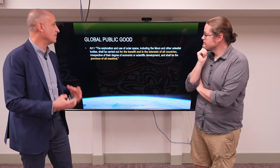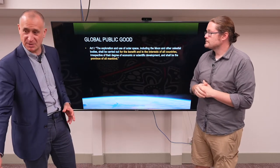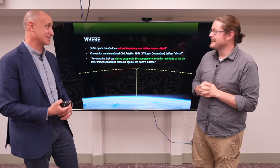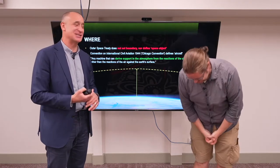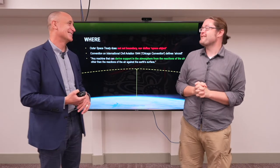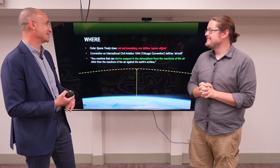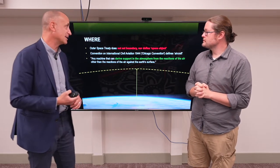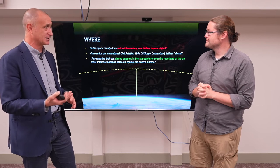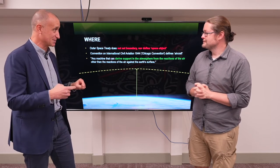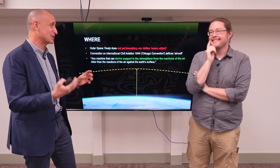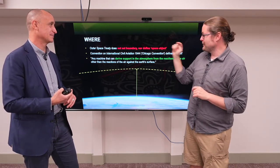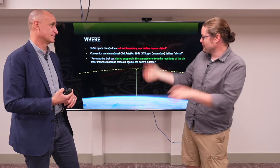So first of all — I think I might have missed one. Where is space? This is the delimitation between airspace and outer space, and this is one of my favourite topics. The Outer Space Treaty doesn't actually set a boundary and it doesn't define a space object. It does use the word 'space object,' but it doesn't say what a space object is. So the law doesn't define where it starts or what it is, but uses those terms.